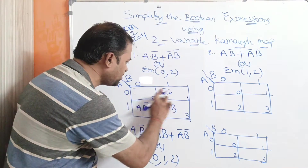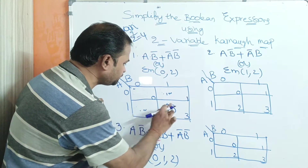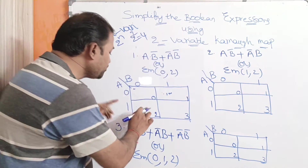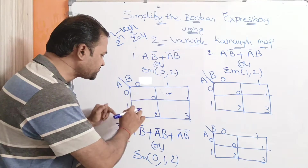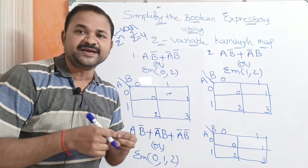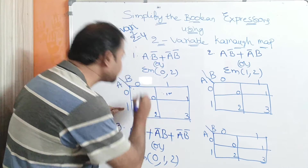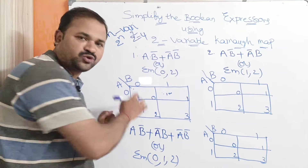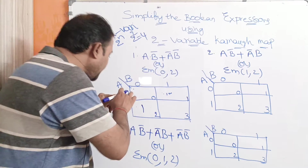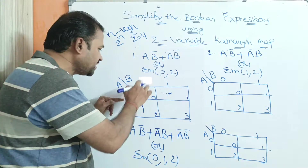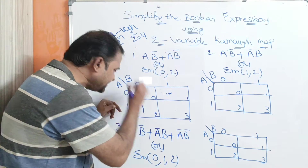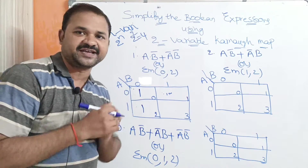Let us look at the first problem: ab̄ + āb̄, or sigma m of 0 comma 2. For ab̄, a equals 1 and b̄ means b equals 0, so we write 1 in that cell. For āb̄, a equals 0 means this row and b equals 0 means this column, so we write 1 in the āb̄ cell.